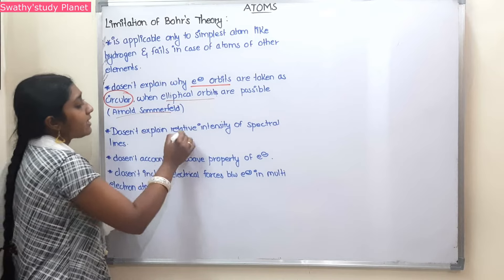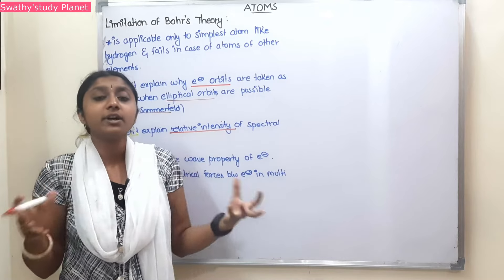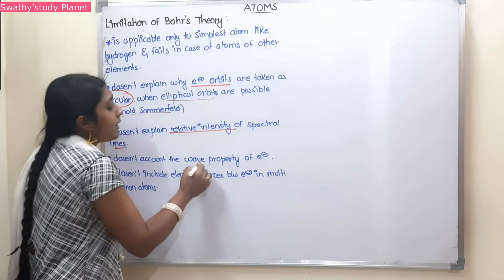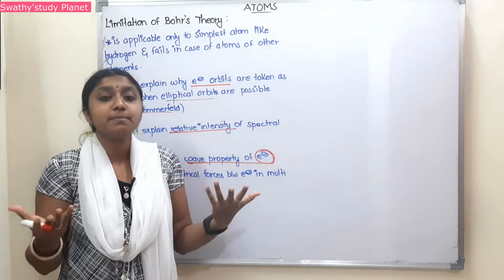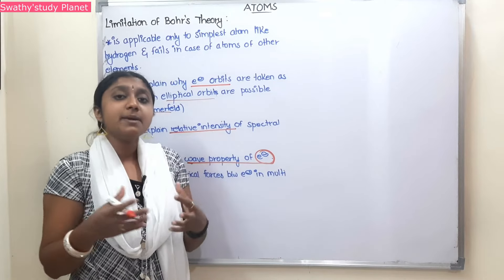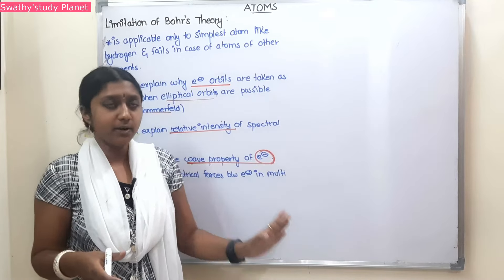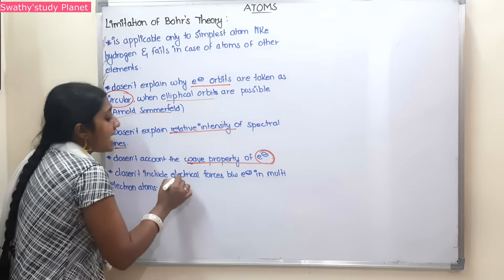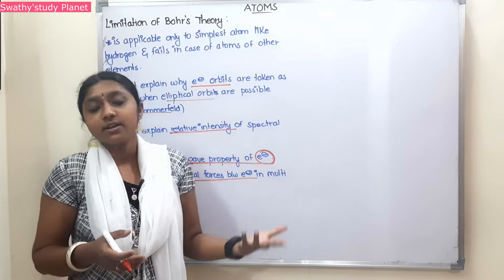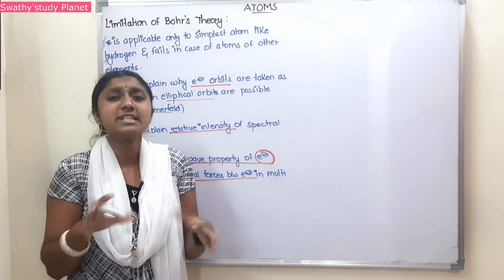Third limitation: it doesn't explain the relative intensity of spectral lines. If there is a spectral line, there is a comparison of intensities that Bohr's model cannot account for. Fourth point: it doesn't account for the wave property of electrons — electrons have wave nature. Fifth: it doesn't include electrical forces between electrons in multi-electron atoms. If there are two or more electrons, the electron-electron repulsion forces are not considered.